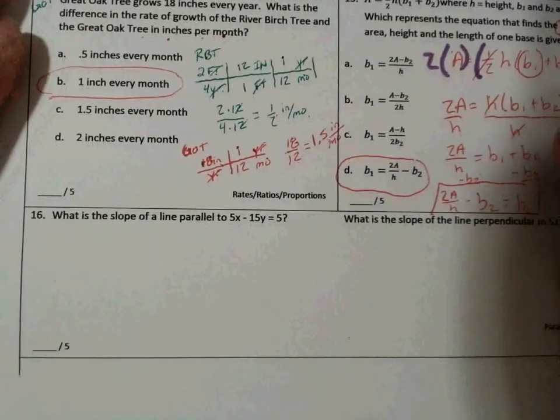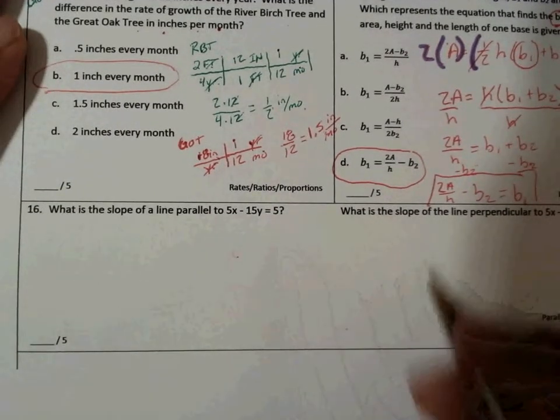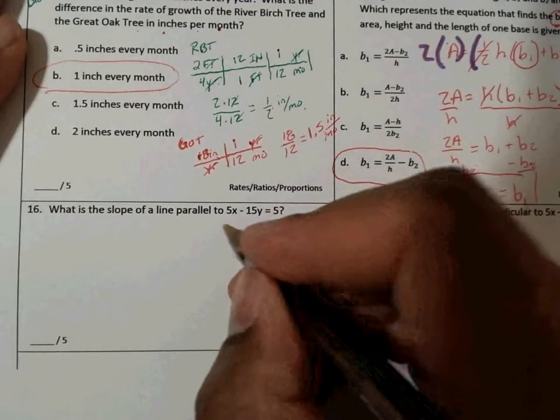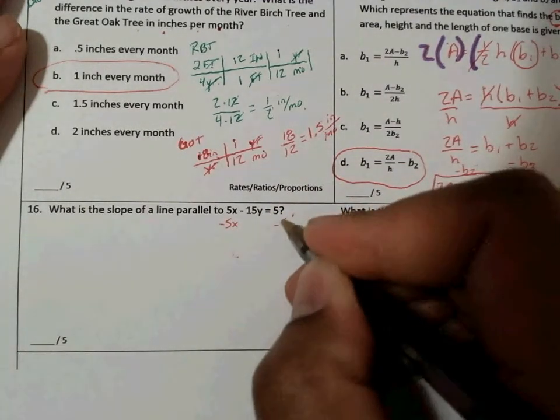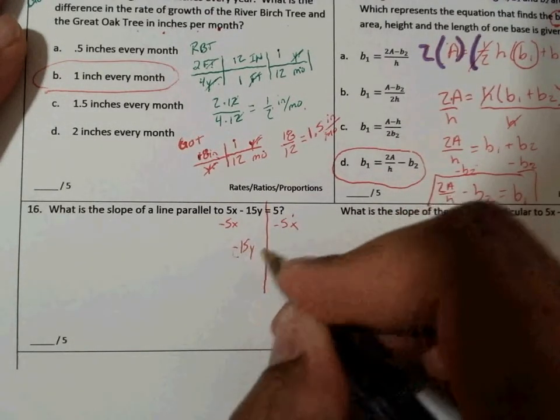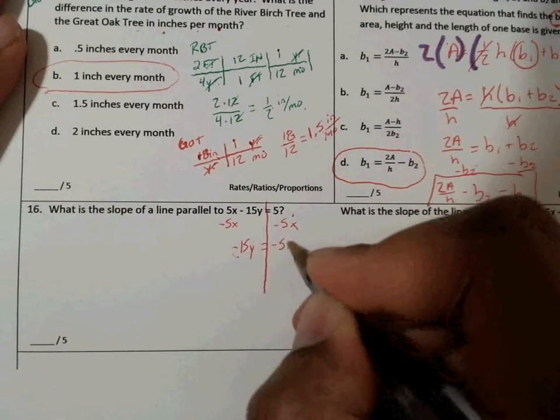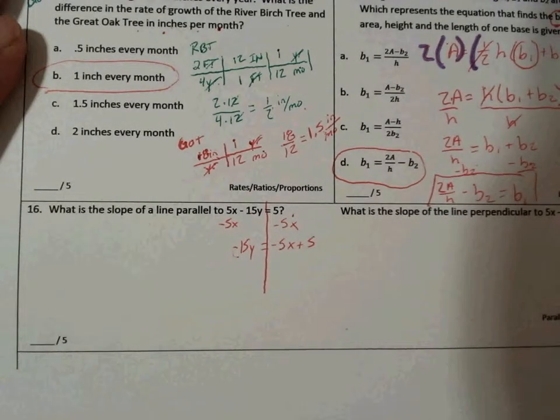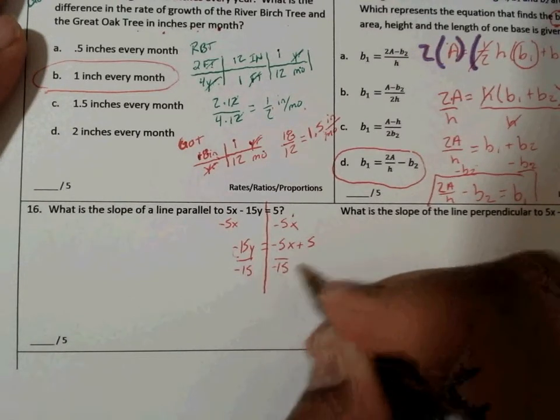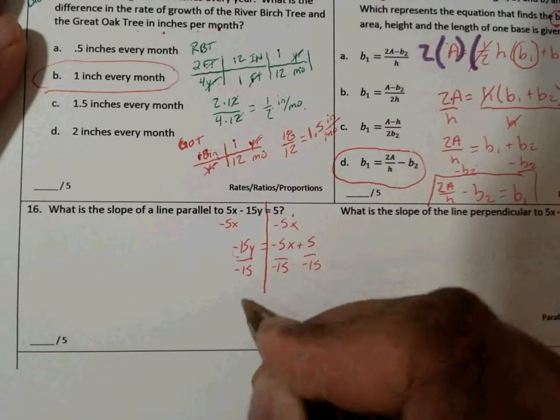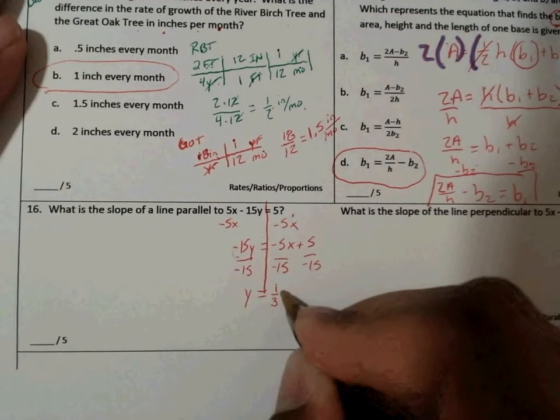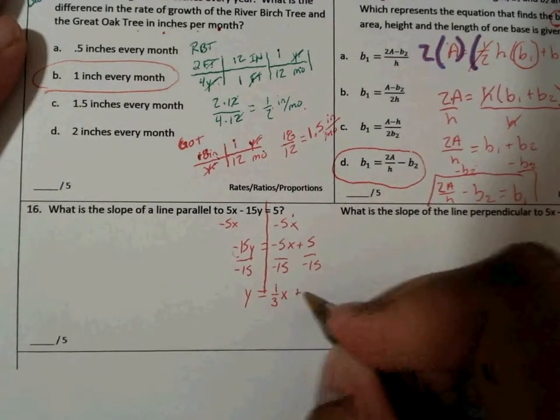Let's go through problem number 16. It says what is the slope of the line parallel to 5x minus 15y equals 5. Well, of course first we need to know what this slope is, so we need to solve for y. I'm going to subtract 5x, subtract 5x, and we're left with negative 15y is equal to negative 5x plus 5. And then we just divide everything by negative 15. So we can see that y is equal to, a negative negative is a positive, this reduces to 1/3, and this reduces to negative 1/3.